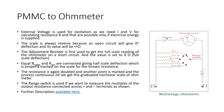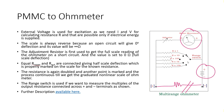Now we look at PMMC to ohmmeter conversion. Unlike ammeters and voltmeters, when measuring resistance there is no external energy source — a battery must be installed inside. An open circuit should read infinity, and a short circuit should read zero, so the ohmmeter scale is reversed.